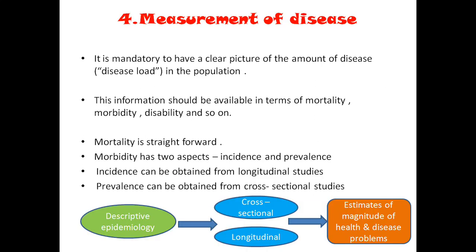We have reached the fourth step. The first was defining the population, then defining the case, then describing the disease based on time, place, and person. In time we had short-term fluctuation, periodic fluctuation, and long-term trends, and we saw epidemics. The fourth step is measuring the disease.